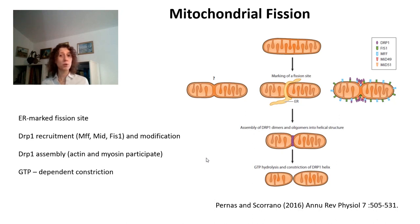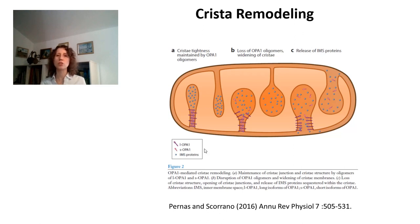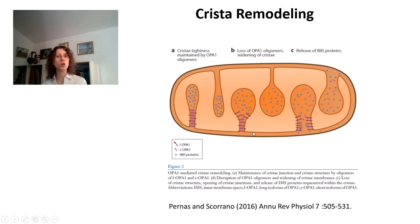In fact, most of the proteins that regulate mitochondrial fission and fusion are GTPases. Crista remodeling happens both during fission and fusion, and also independently over time in a single mitochondrion. Crista remodeling can change both the tightness of the junctions and the characteristics of the crista themselves. There are many proteins that mediate this, including the short and long forms of OPA1, which is a very important protein in guiding crista remodeling.